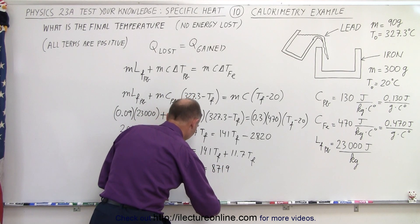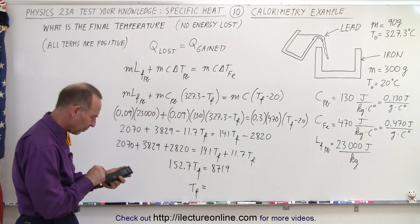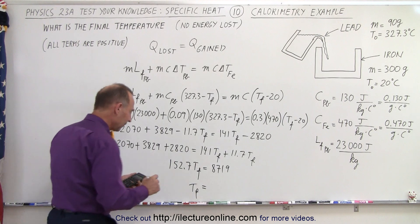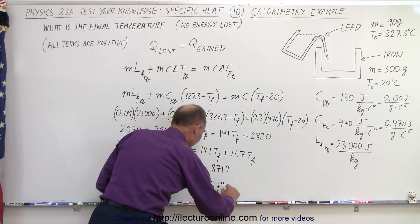And then when we divide both sides by 152.7, we get 57 centigrade degrees or degrees centigrade.